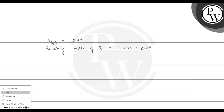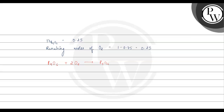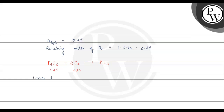Next, P4O6 reacts with O2 to form P4O10. After balancing, the equation is: P4O6 + 2O2 → P4O10. We have 0.25 moles of P4O6 and 0.25 moles of O2 remaining. According to the balanced equation, 1 mole of P4O6 requires 2 moles of O2, so 0.25 moles of P4O6 would need 0.50 moles of O2. But we only have 0.25 moles of O2, so oxygen is the limiting reagent in this step.